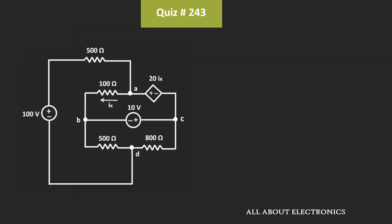Now in this question, we have not been given which is the reference node. So according to our convenience, we can consider any node as the reference node. And according to the node we choose as the reference node, the voltage at each node will change. But here, as we are interested in finding the power absorbed by this 800 Ohm resistor, we need to find the voltage between these two nodes, or the current flowing through the 800 Ohm resistor. So if we just find that, we can find the power absorbed by this 800 Ohm resistor.